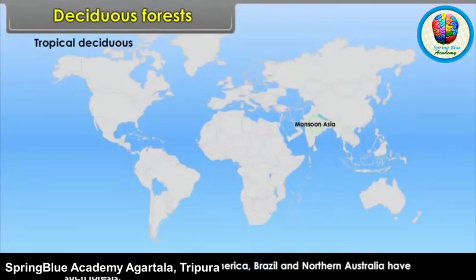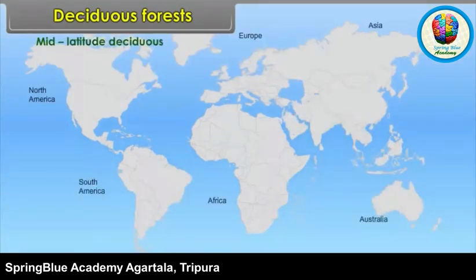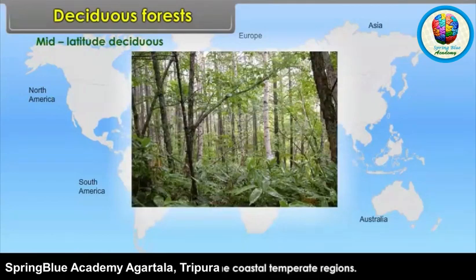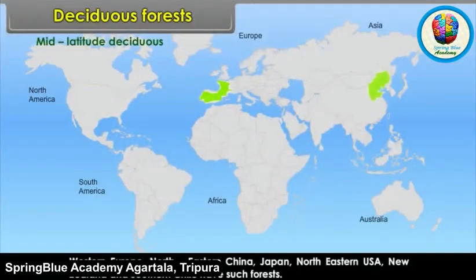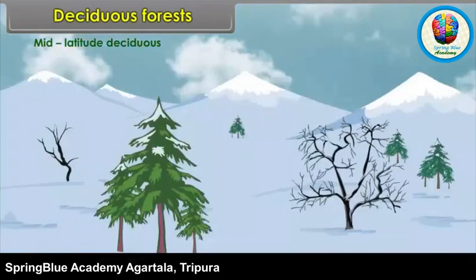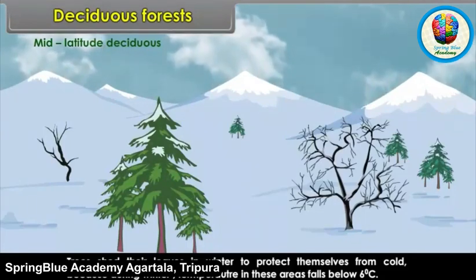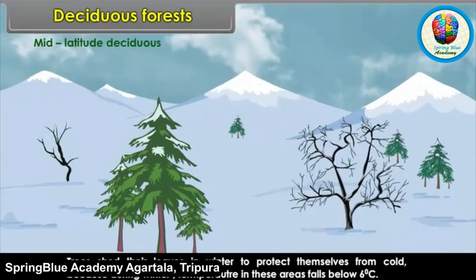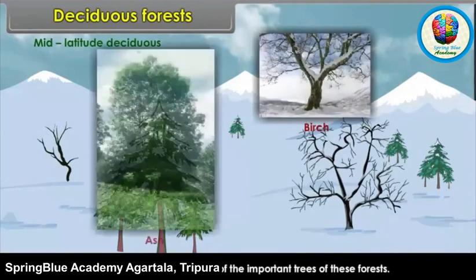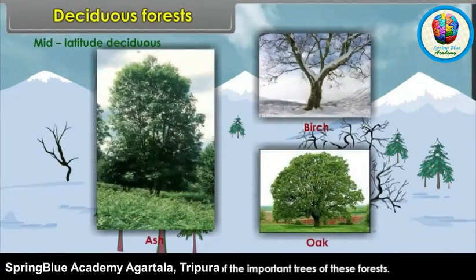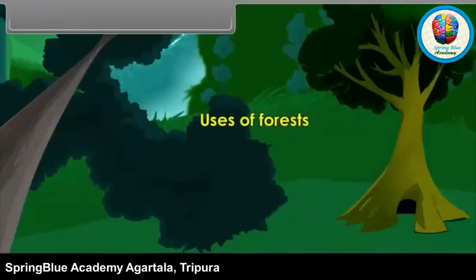Monsoon Asia, parts of Central America, Brazil and Northern Australia have tropical deciduous forests. Mid-Latitude Deciduous Forests: These forests occur in coastal temperate regions. Western Europe, Northeastern China, Japan, Northeastern USA, New Zealand and Southern Chile have such forests. Trees shed their leaves in winter to protect themselves from cold, as temperature in these areas falls below 6 degrees Celsius. Birch, Ash and Oak are some important trees of these forests.